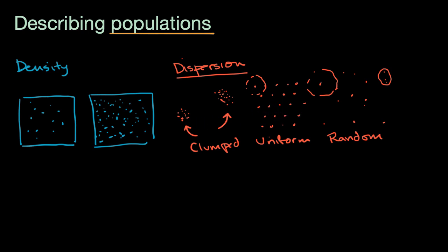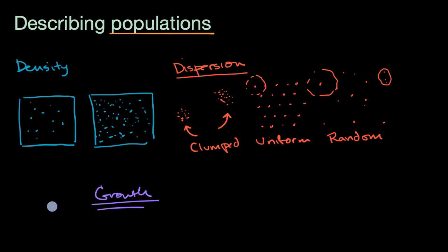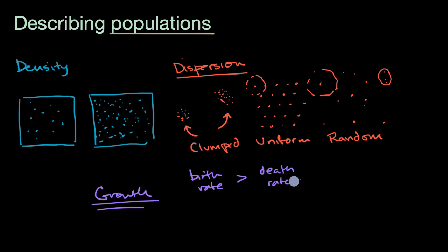The last dimension of describing populations — and there are many other ways to describe them — is the growth of a population. What would cause a population to grow or shrink at a very basic level? If your birth rate is larger than your death rate, that's going to lead to growth — your population is going to increase.